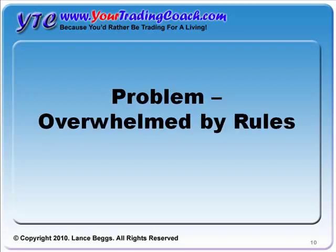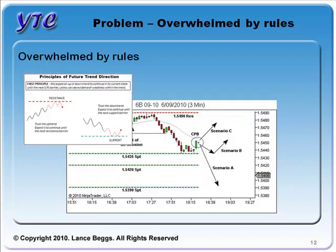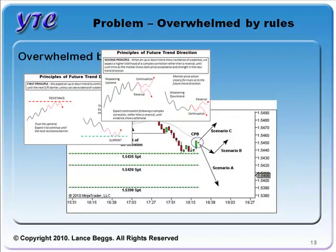From reader feedback I see one main problem: some people are just overwhelmed by the rules — specifically the six principles provided for future trend direction. Traders look at price action, conduct their analysis, and then in their mind there is just a whole mess of rules. Rule one: we expect an up or down trend to continue in its current state until the next SR barrier, unless we see evidence of weakness within the trend. Rule two: when a trend shows evidence of weakness, we expect a higher likelihood of a complex correction rather than a reversal, until the market shows both price acceptance and strength in the new trend direction.